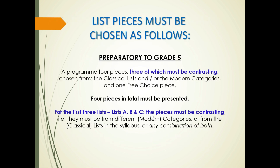List pieces may be chosen as follows for preparatory to grade 5. A program of four pieces, three of which must be contrasting, chosen from the classical lists and/or the modern categories, and one free choice piece. For the first three lists — A, B, and C — the pieces must be contrasting, meaning they must be from different modern categories or from the classical lists in the syllabus, or any combination of both.